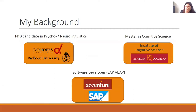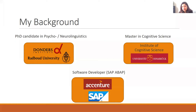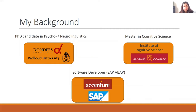So my background: as mentioned before, I'm a PhD candidate at the Donders Institute at Radboud University in Nijmegen, Netherlands. Before that, I did a master's in cognitive science with psychology and neuroscience as my majors. But before that, in another life in India, I was a software developer. I worked in a company called Accenture, and I worked with a technology called SAP — some of you may have heard of it, some of you might have used it even.